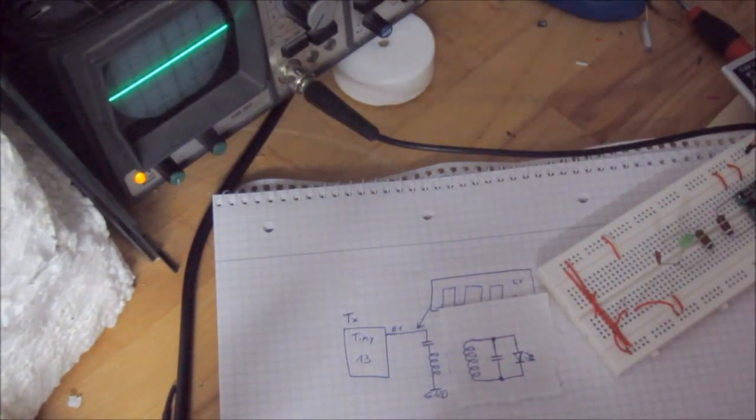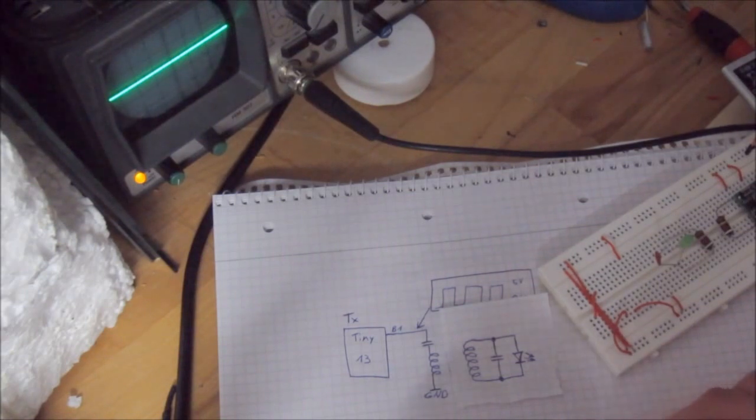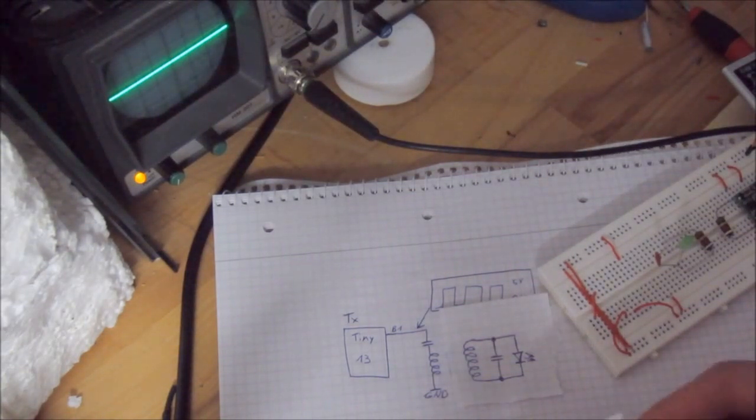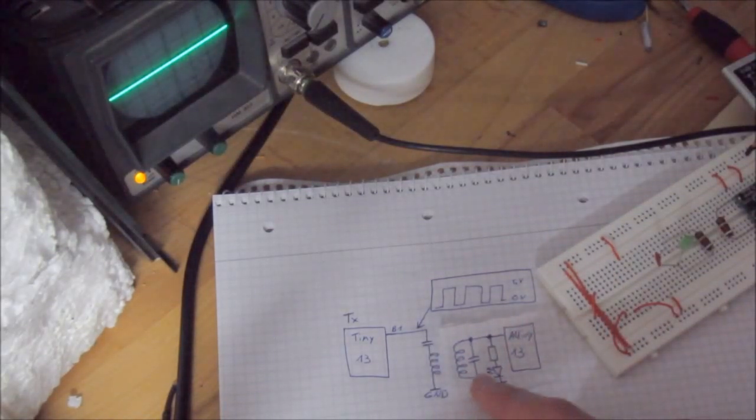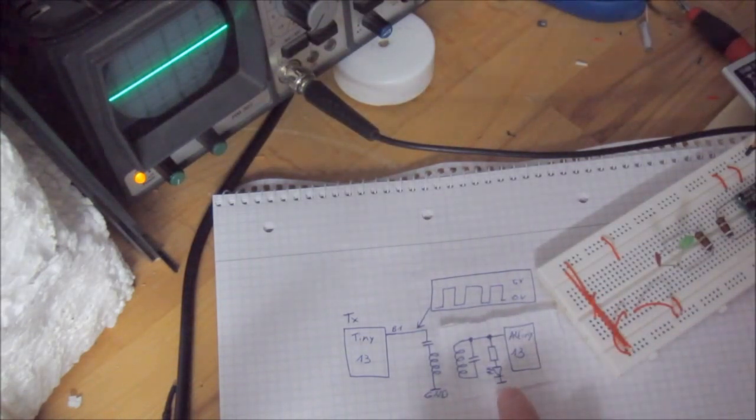And if we want to transmit something and receive the signal with a microcontroller, we could use this circuit. You can see the same circuit from the LED over here, and the LED is used as a small capacitor.